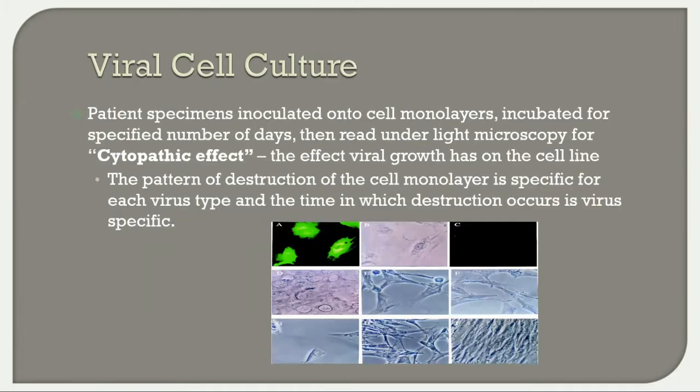In viral cell culture, patient specimens are inoculated into the cell monolayer, incubated for a specified number of days, then read under a light microscope for the cytopathic effect. This is the effect viral growth has on the cell line. The pattern of destruction of the cell monolayer is specific for each virus type, and the time in which destruction occurs is also virus-specific.